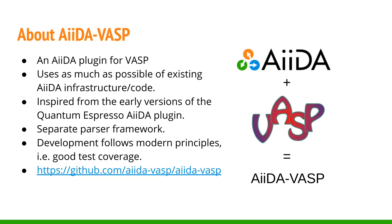IDA-VASP facilitates an interface between IDA and VASP. In the IDA ecosystem, it is referred to as a plugin. IDA-VASP tries to reuse as much as possible of the existing IDA infrastructure and code. It is inspired by the earlier versions of the IDA plugin for Quantum Espresso, another code that also offers tool chains for the materials modeling community.